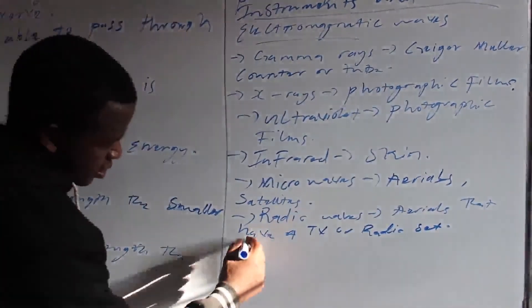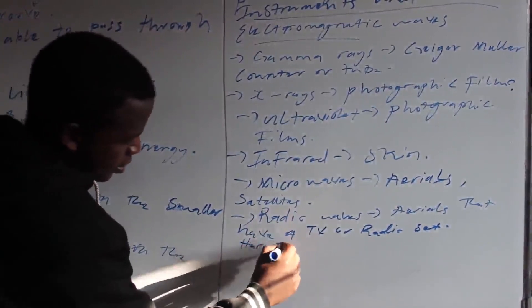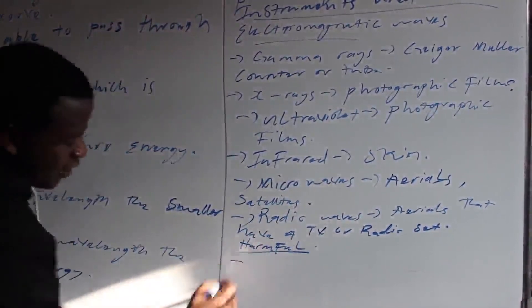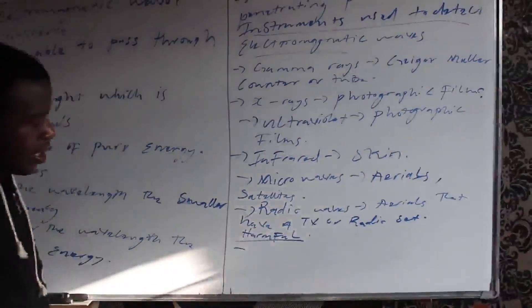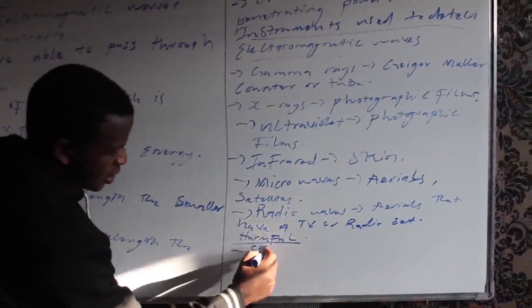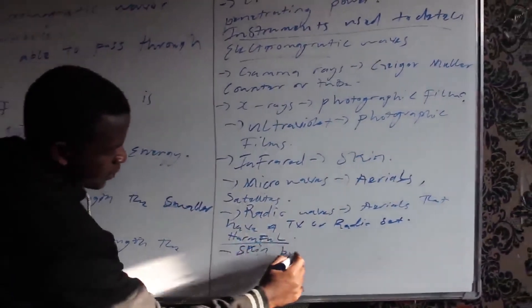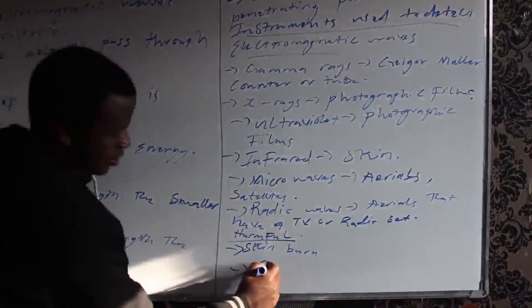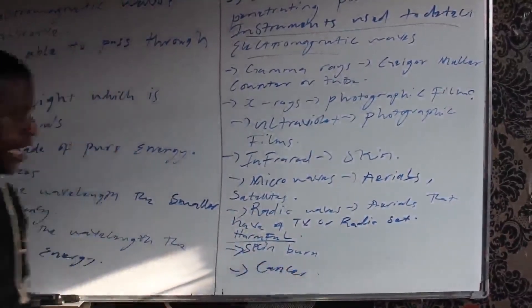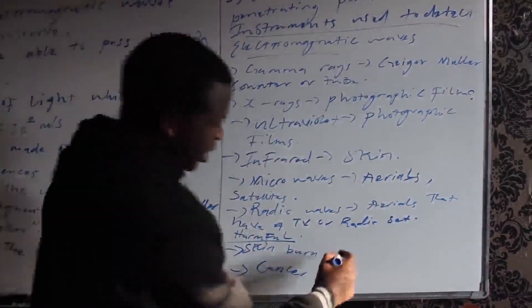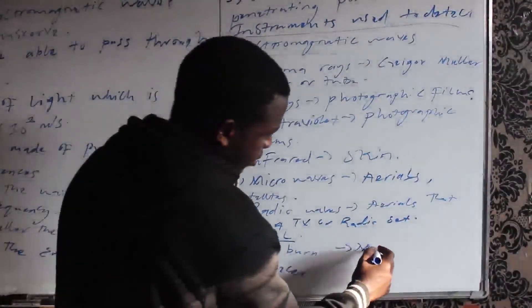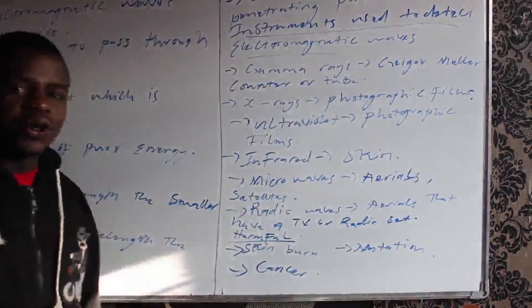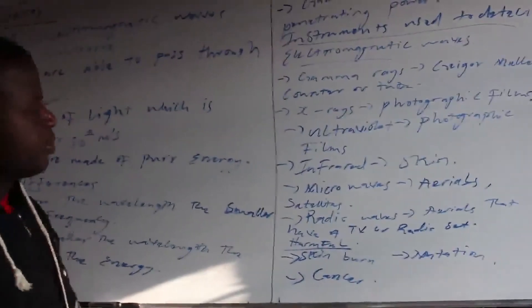The harmful effects of electromagnetic waves: the first harmful effect is that they cause skin pain. The second is that they cause cancer. The third is that they cause mutation. We are now done on the electromagnetic spectrum. Thank you.